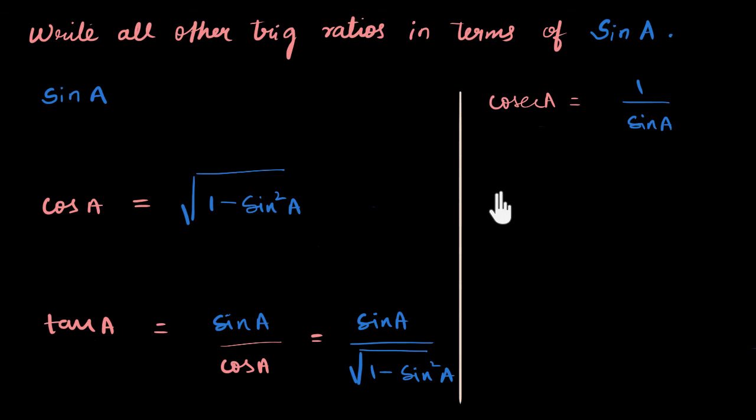Then we have secant A, which is just 1 by cos A. And I can just write 1 by this now, because I already did that hard work. Root of 1 - sin² A. And the same story over here for tan A. The reciprocal of tan A is cot of A. And that's going to be equal to the reciprocal of this, which is root over 1 - sin² A divided by sin A.